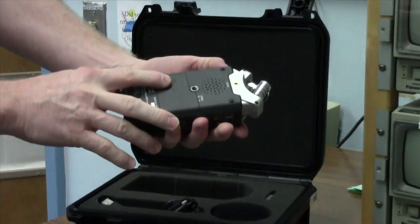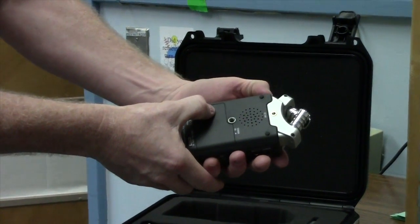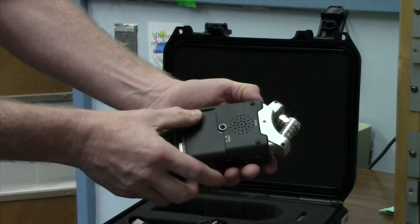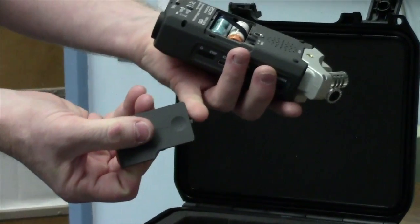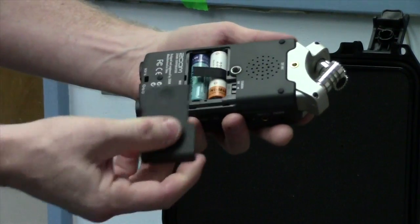The battery latch on the back is really sensitive and you actually have to push it down a little bit before sliding it to the right. Otherwise that can break off the little tab on the end so we want to just be careful with that.